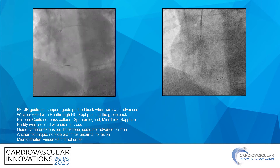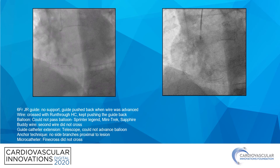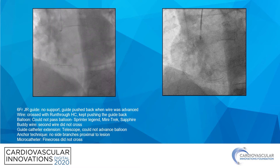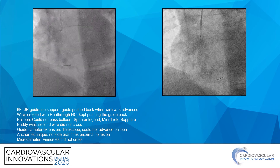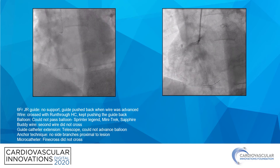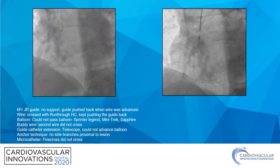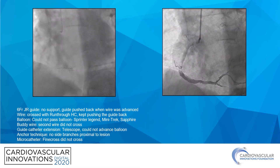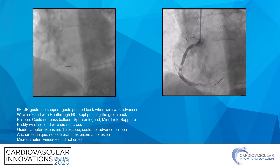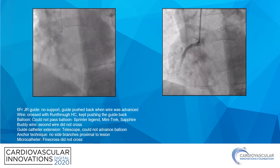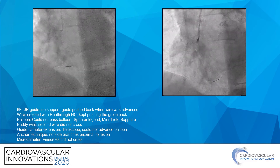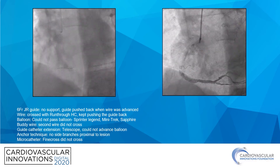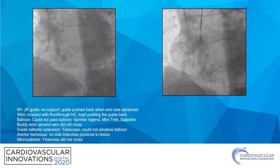I could not use the anchor technique because there were no side branches proximal to the lesion, and tried a FineCross which would not cross and was pushing the guide out. At this point I decided to stop and exchange my guide to a more supportive guide. I used an AL.75, and you can see it's sitting nicely with back wall support. I then tried the rota floppy wire, and with some difficulty I was able to cross the lesion and put the wire in the distal artery.